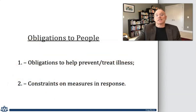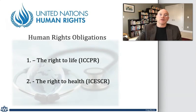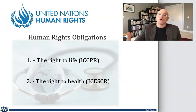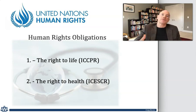Let's turn to the second set of obligations — the obligations of states to the people within their territory. Again, there is an obligation to prevent harm and there are constraints on the measures that states can take in response to pandemics. The starting point for affirmative obligations are really two treaties that form the bedrock of human rights law: the International Covenant on Civil and Political Rights, or the ICCPR, and the International Covenant on Economic, Social and Cultural Rights, or the ICESCR. These comprise the core of what is commonly referred to as the International Bill of Rights. They provide for a right to life and a right to health and well-being, and together these rights require states to take affirmative action to protect the people within their territory from the threat posed by a pandemic.